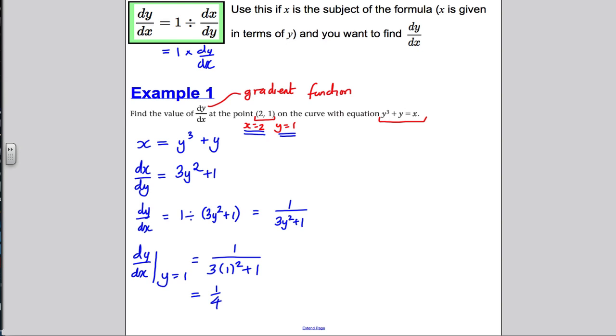So, what we've done here is x was the subject of the formula, x was in terms of y's, so we differentiated with respect to the variable y. Then we used the fact that dy by dx was the reciprocal of dx by dy and to work out the gradient function at a point x, y, we just substituted in the y value this time into our gradient function rather than, in the past, we've always subbed in an x value.